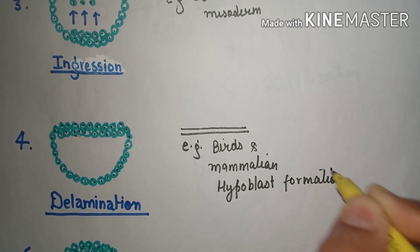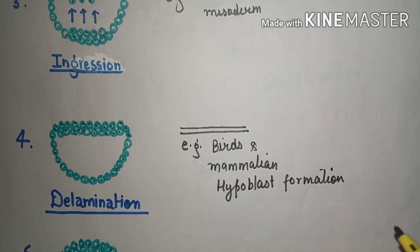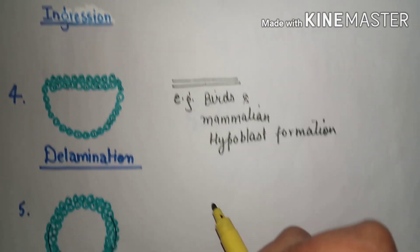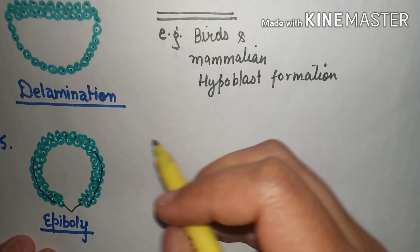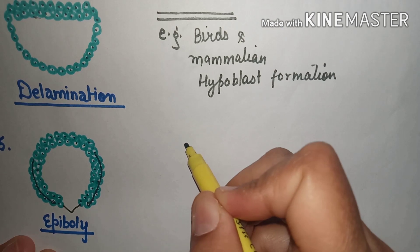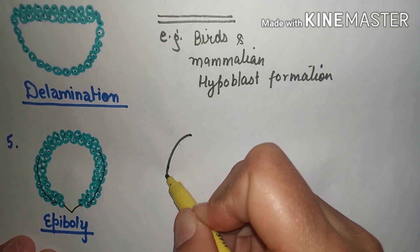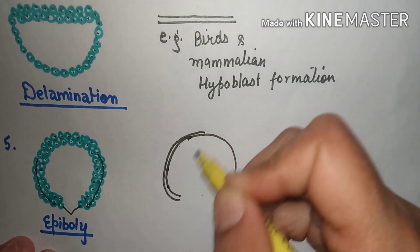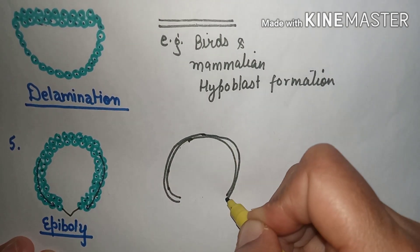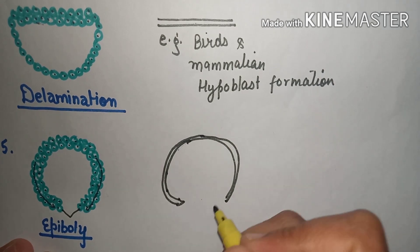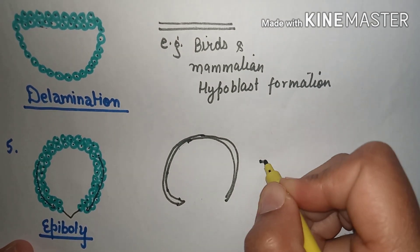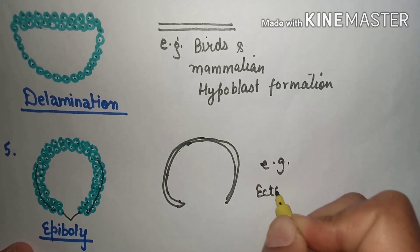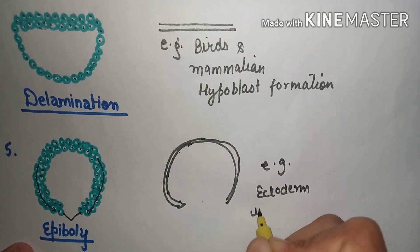The fifth type of cell movement is known as epiboly. Epiboly occurs when one layer expands over another layer. The second layer expands on top of the first layer, and this type of cell movement is known as epiboly. It appears in the ectoderm in the case of amphibians.